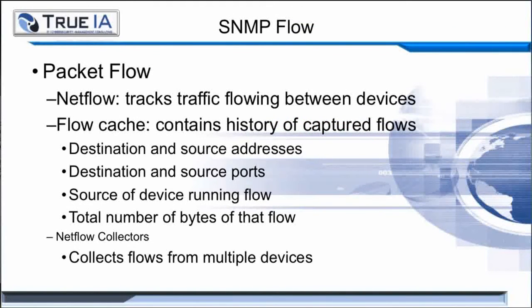The next subject is packet flow, which you might hear called NetFlow data. This tracks traffic flowing between devices. The flow cache contains the history of all the captured flows, including destination and source addresses as well as destination and source ports. The amount of NetFlow data available can be overwhelming for most networks, so it's recommended to employ a NetFlow collector, which collects flows from your multiple network devices.